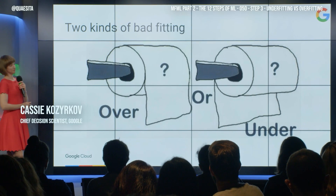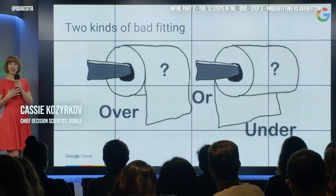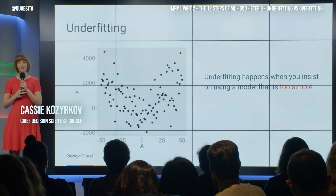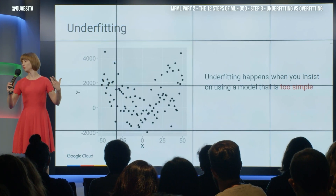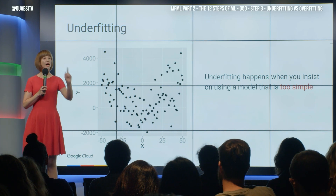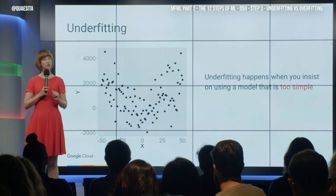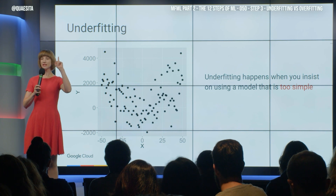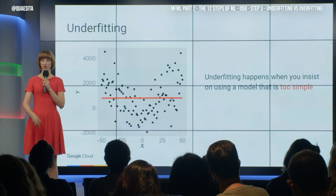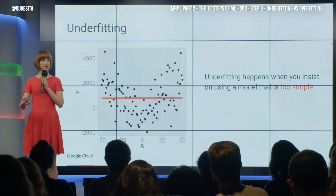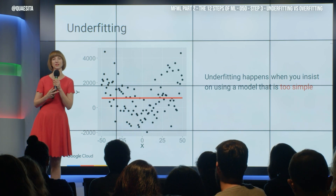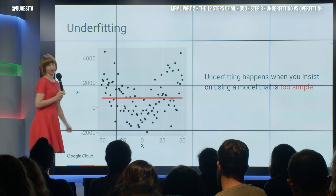We talked about overfitting, and you may be wondering: is there such a thing as underfitting? There is. Underfitting happens out of hubris — when you say something like, 'I learned about straight lines in school, and I insist on using a straight line to solve this problem.' The straight line doesn't fit your data nicely. You didn't let your data speak, and so you get bad performance.